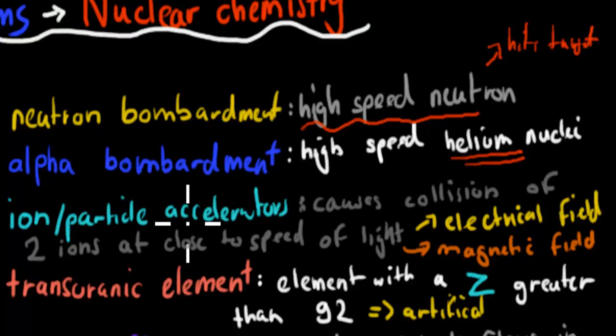Ion or particle accelerator, that was a cause of collision of two ions. So this could be, for example, nickel and bismuth hitting together. And they almost hit together at the speed of light. And that speed of light was achieved through both the combination of electrical fields and magnetic fields. The ion and particle accelerators are huge buildings or projects.